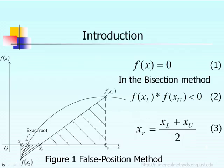Let's say we have a nonlinear function f equal to 0, as indicated in equation 1. For that nonlinear function, if we plot it, you can see the horizontal axis is the x-axis and the vertical axis represents the function value. The function f can be plotted and it looks like this red curve shown here. To find the root of this nonlinear equation f equal to 0 means to find the value of x such that the function equals 0. You can see the exact root of this nonlinear equation will be around right there.